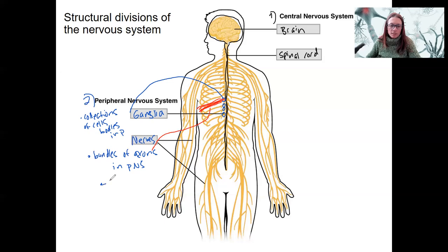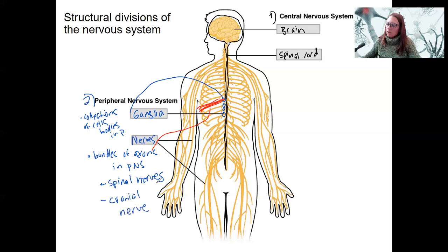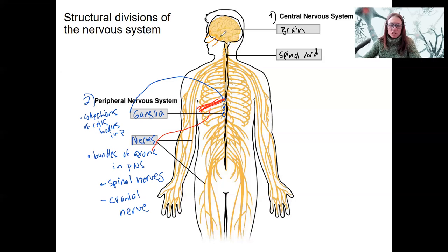One type is spinal nerves — that's what's shown here, all coming from the spinal cord. There also are things called cranial nerves, which come from the brain. There are nerves that connect to the eyes and nose and various regions of the face. These are cranial nerves, part of the PNS.